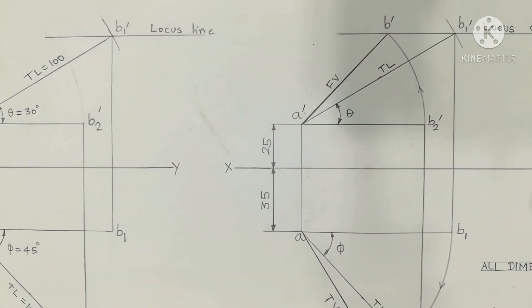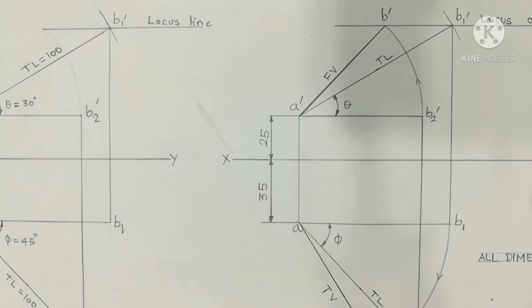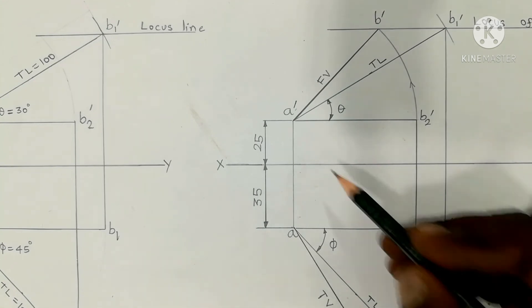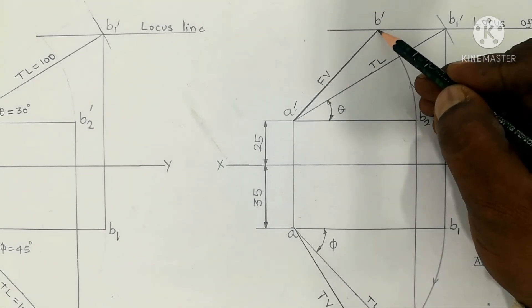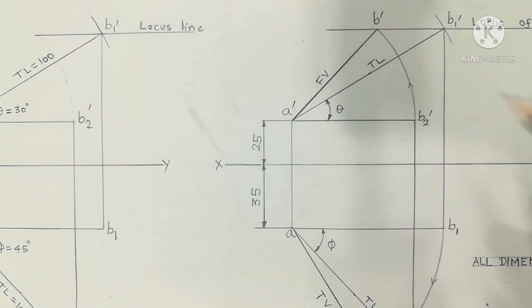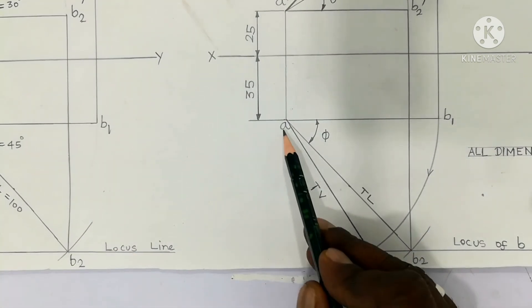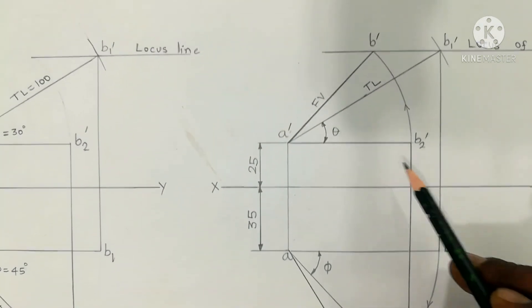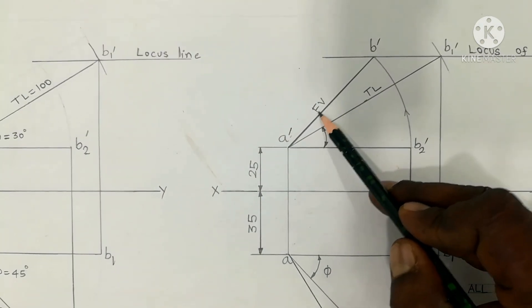Then we complete the diagram called final front view and final top view. A prime B prime is the final front view. AB is the final top view, shortly written as TV and FV, front view, final front view.